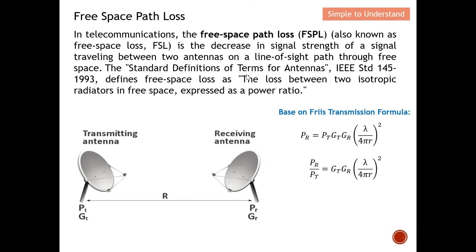According to the IEEE standard, free space loss is defined as the loss between two isotropic radiators in free space, expressed as a power ratio. On my previous video, I derived the Friis transmission formula. From that equation, free space path loss is basically a power ratio, so I move the transmit power over to the left to get the free space path loss equation.